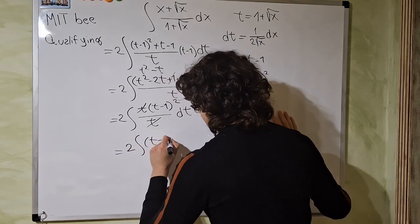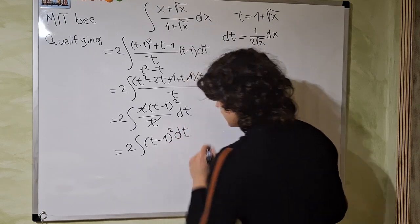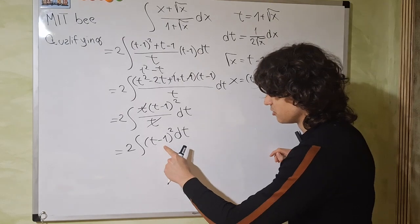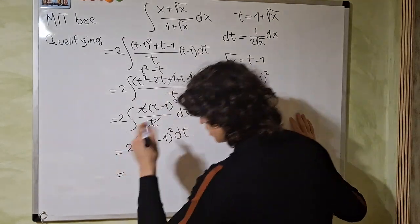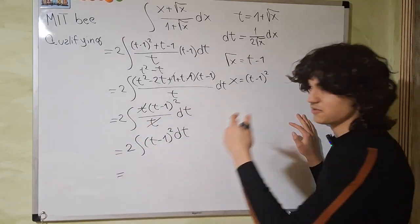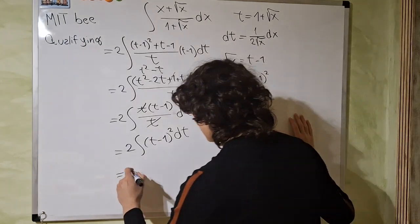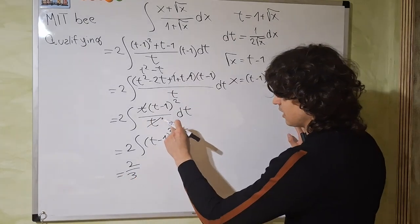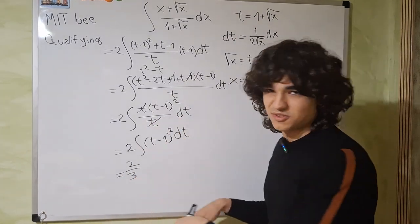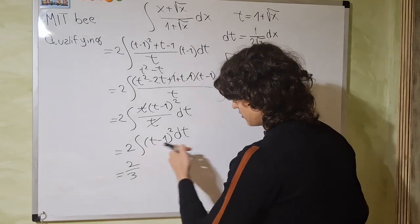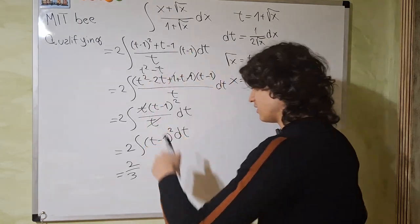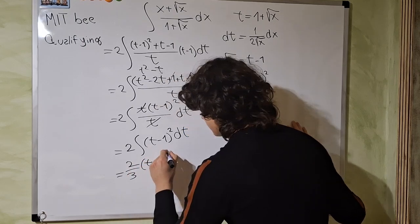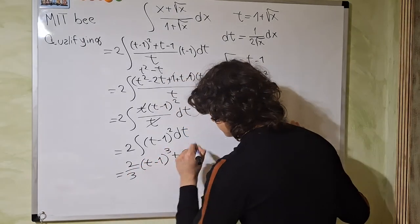And we have this nice integral, the integral of t minus 1 squared. Now you could use a u substitution, u equals t minus 1. And nothing changes actually, because the derivative of 1 is 0. So the differential remains the same. So all in all, what you have is 2 divided by 3. Because we have to add 1 to the exponent and bring it to the denominator when we integrate x to the n. And then we have t minus 1 to the third power plus the integration constant.